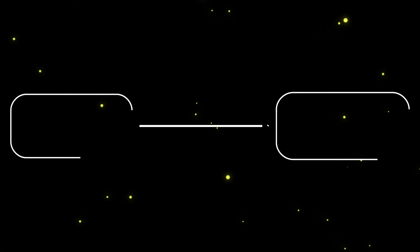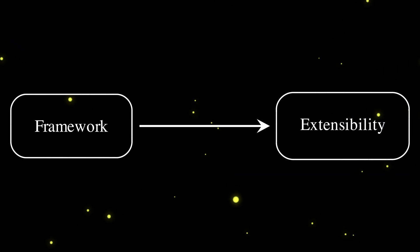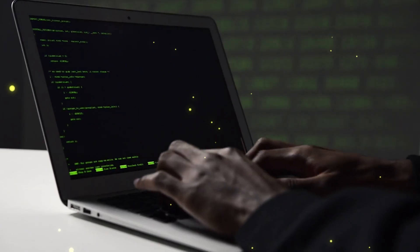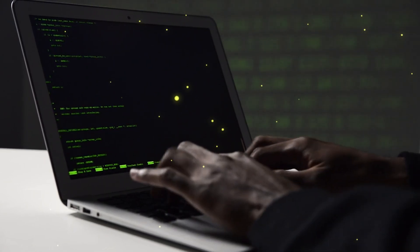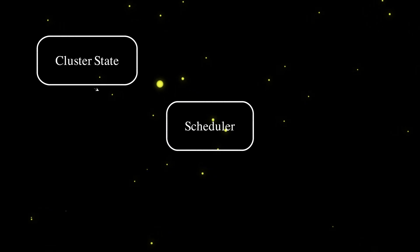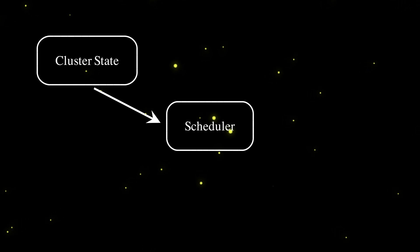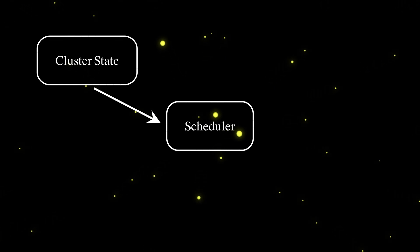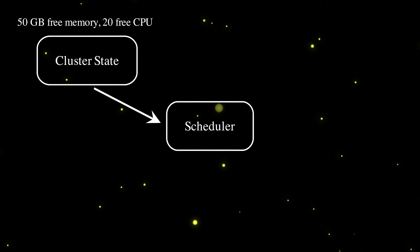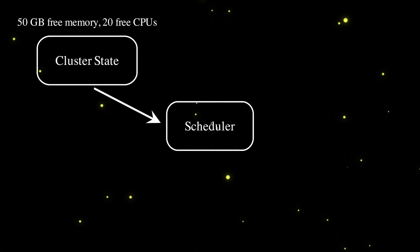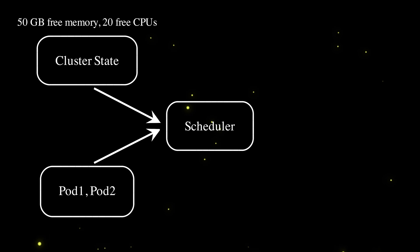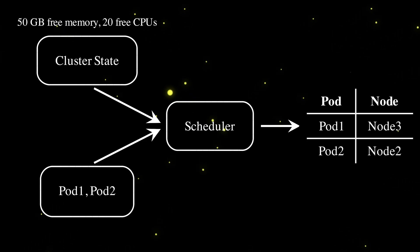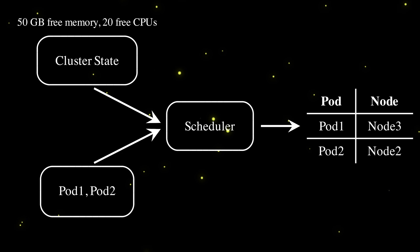Kubernetes is a framework, which means that it allows developers to extend it, and this includes the scheduling part. So in other words, you can create your own scheduler in Kubernetes where you can implement any scheduling logic that you want. In a simplified way, the scheduler takes two inputs: the cluster state — which consists of the worker nodes and their current resource usage and limitations, basically how much CPU and memory is used in the cluster and how much is free — and the new pods that need to be scheduled. With those two inputs, the scheduler does its magic and outputs a mapping between a pod and the worker node where that pod should be scheduled.